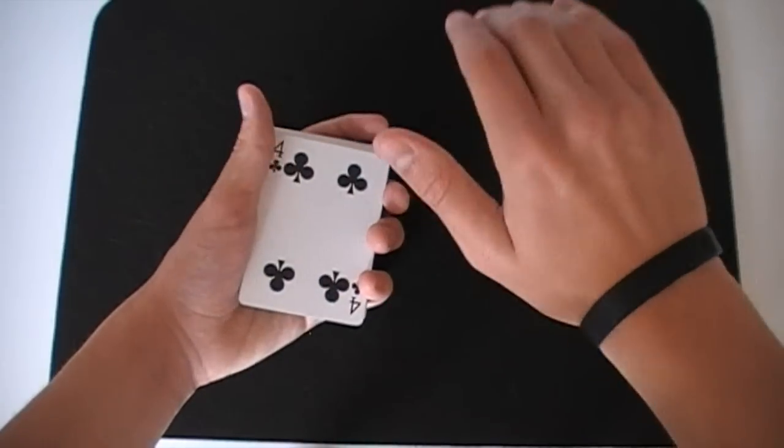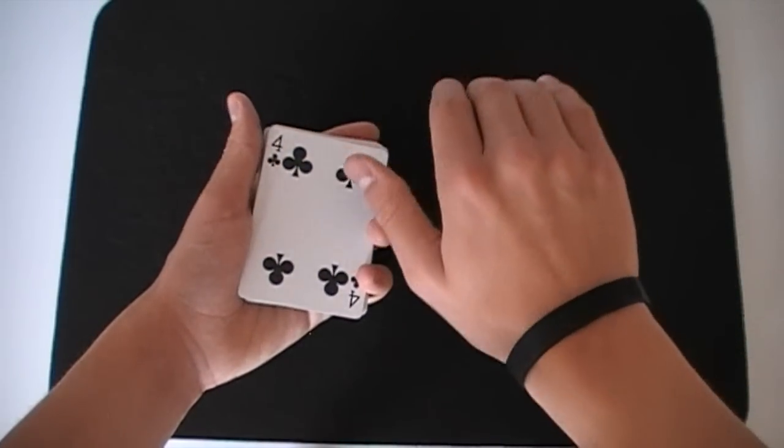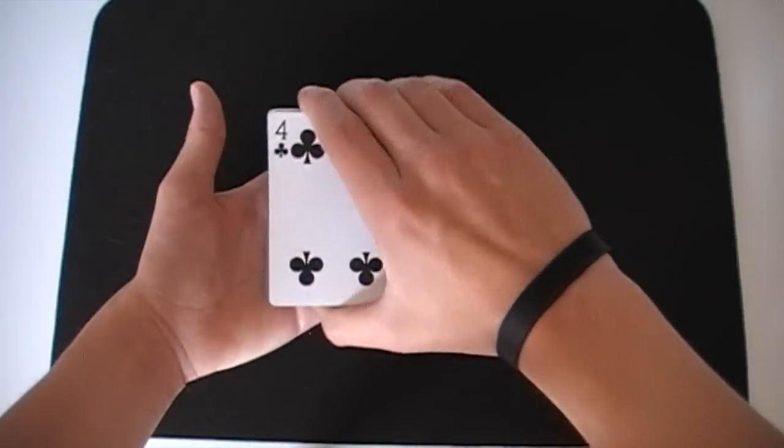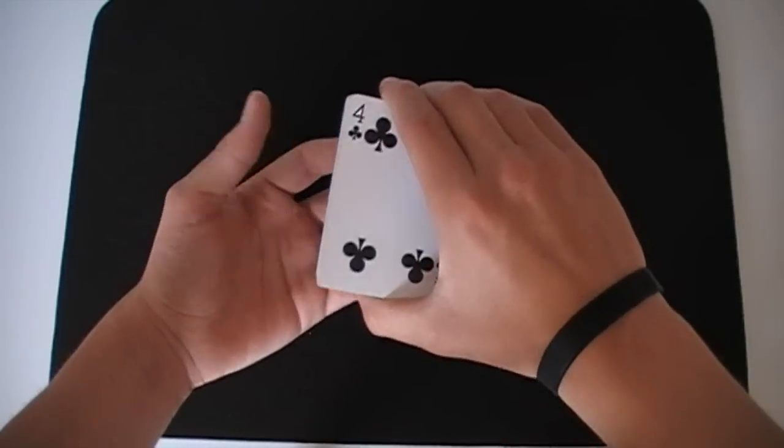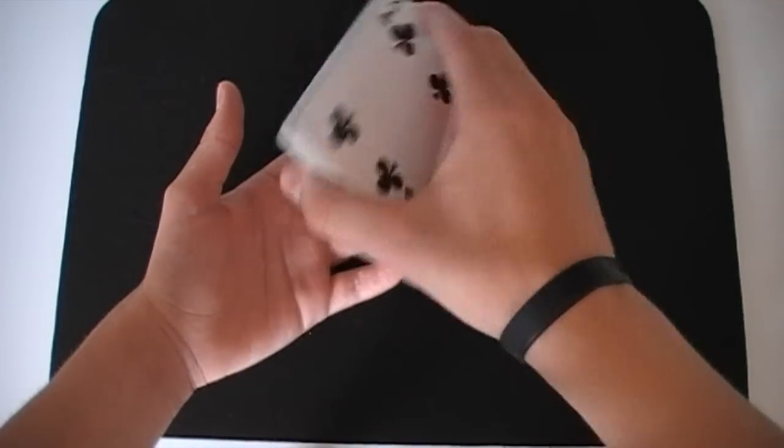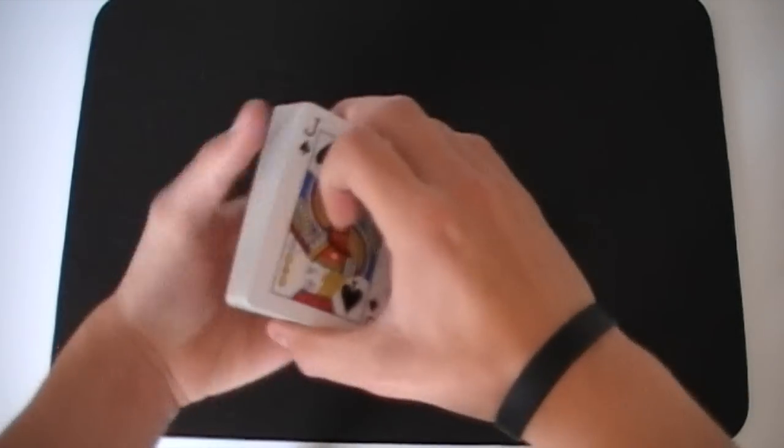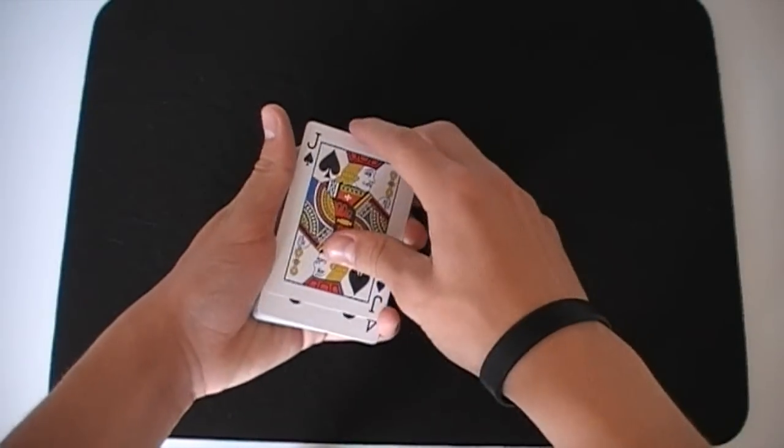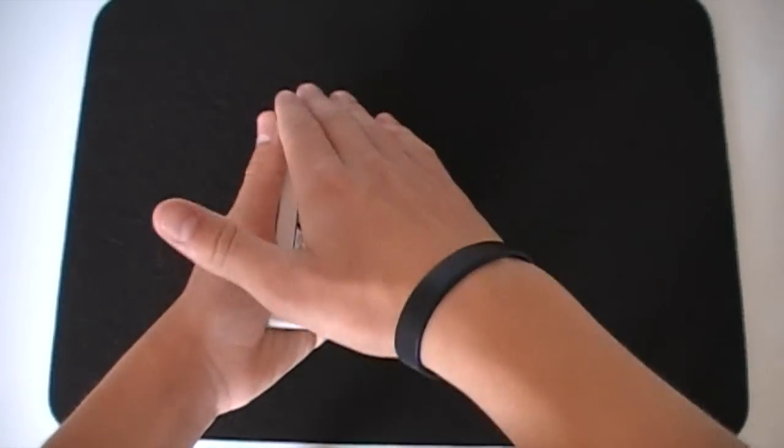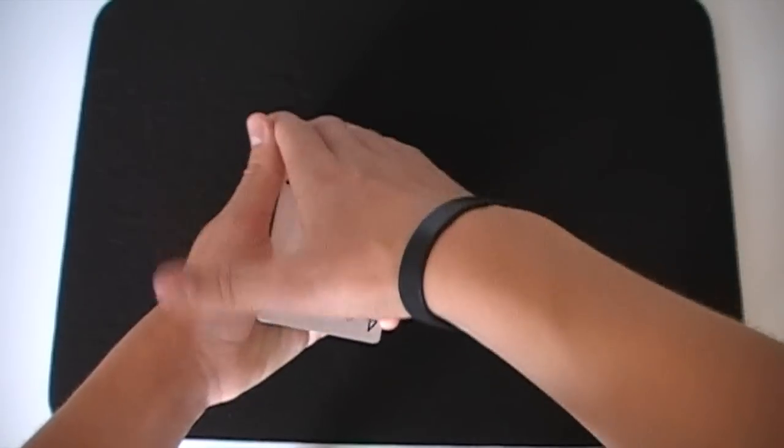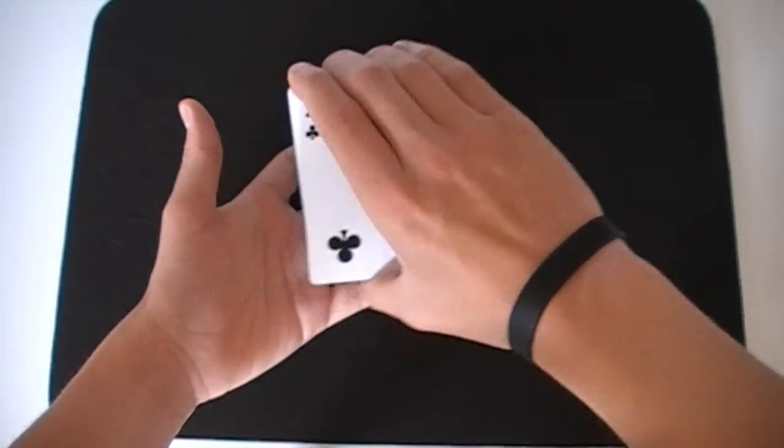But this is going to be invisible to the spectator anyway because you're going to be holding the deck with your right hand as well. OK, so that's just very quickly how to get into a palm. One more time: overhang about a centimeter, put the pressure there, that card will flip up and you're in palm position.